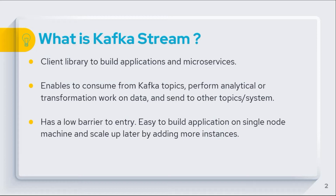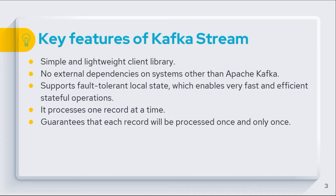Kafka Streams has a low barrier to entry, meaning we can quickly build and run an application on a single node machine, and when we want to scale it up, just run additional instances so it can handle high volumes of data. It is a simple and lightweight client library that can be easily plugged into any Java application. It has no external dependencies on any other systems but Apache Kafka, supports fault-tolerant local states enabling very fast and efficient stateful operations, and processes each record one at a time.